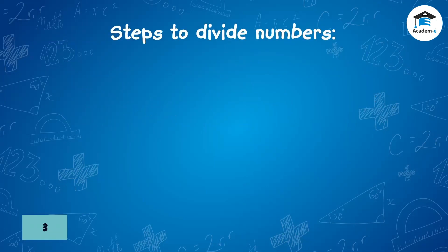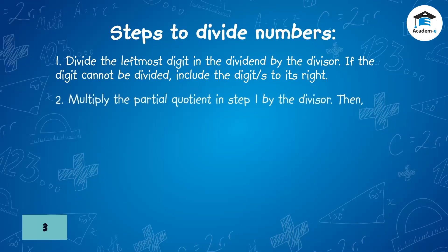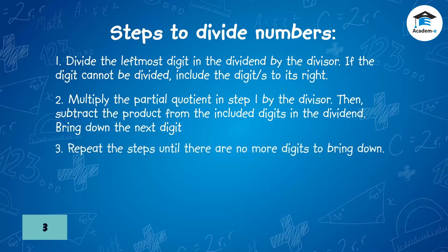Steps to divide numbers. One: divide the leftmost digit in the dividend by the divisor; if the digit cannot be divided, include the digit or the digits to its right. Two: multiply the partial quotient by the divisor, then subtract the product from the included digits in the dividend, and bring down the next digit. Three: repeat the steps until there are no more digits to bring down.